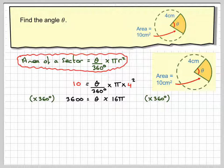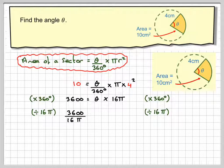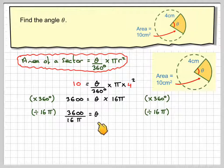The opposite of multiplying by 16π is to divide by 16π. Make sure you're using fractions, so it's 3600 divided by 16π equals theta.